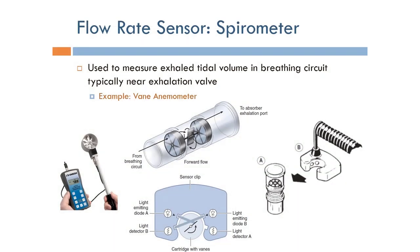Another idea to compute the flow rate is using something called a spirometer. The spirometer is used to measure exhaled volume in the breathing circuit, typically near the exhalation valve. There are several types of this particular sensor.